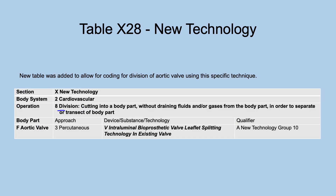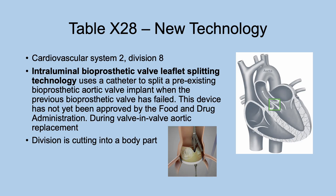Also in new technology, but in division: intraluminal bioprosthetic valve leaflet splitting technology in existing valve, for the aortic valve body part. This uses a catheter to split a pre-existing bioprosthetic aortic valve implant that has failed — so now they split it. This is division, just cutting into a body part. This device had not yet been approved by the Food and Drug Administration at the time these codes were posted, but it may be approved by the time you listen to this video, so check on that before reporting it.